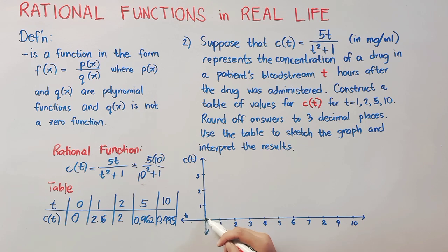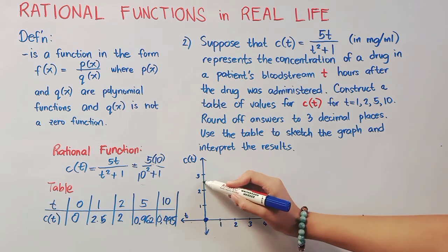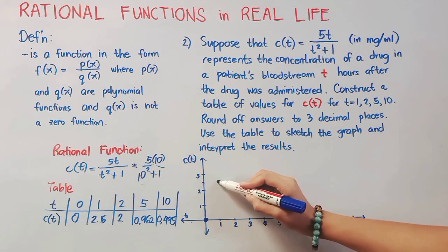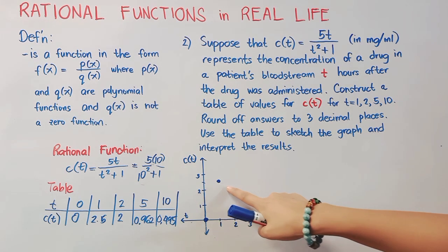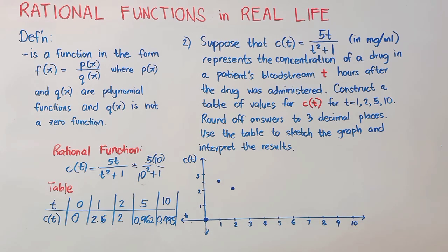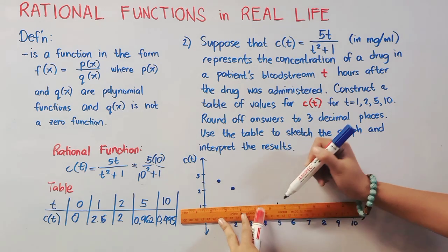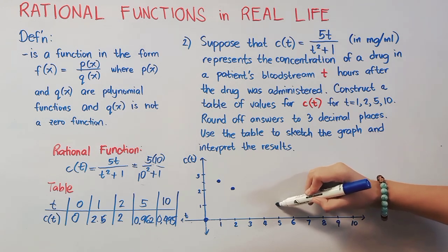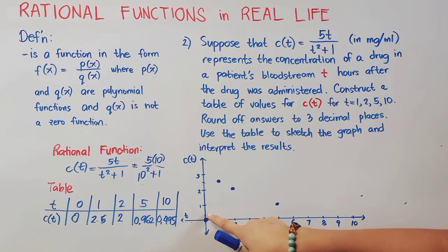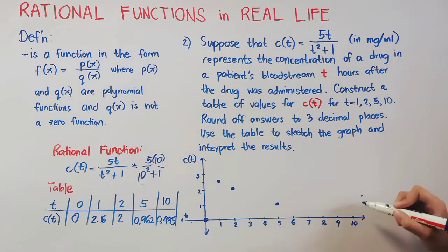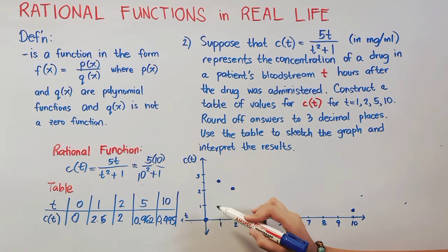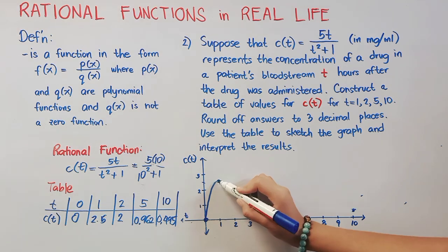Now, from our table, we can now graph. 0, 0 is this point, 1, 2.5 is this point, and then we have 2, 2 here. We also have 5, and then 0.962, so that's close to 1. So, in this portion, so approximately in this point, and lastly, we have 10. Then, 0.495 is close to half of 1, so it's here. Then, we'll simply connect all of the points to get our graph.